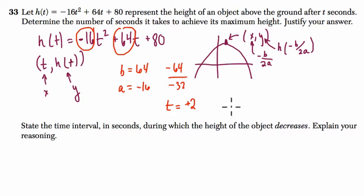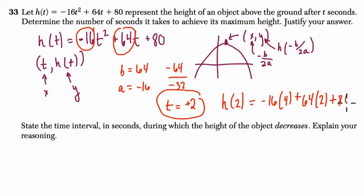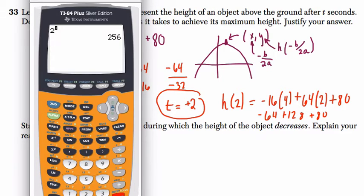Now, if you plug in 2 to your function, you'll actually get the height as well. That's for fun. You do not have to do this for this question. The answer is 2 seconds. h of 2 equals negative 16 times 4, and I'm showing this to you because they might always ask it, or you might want to think about how this is done. It's really valuable information. 64 times 2 plus 80. So here we get negative 64 plus 128 plus 80, and we get 144.